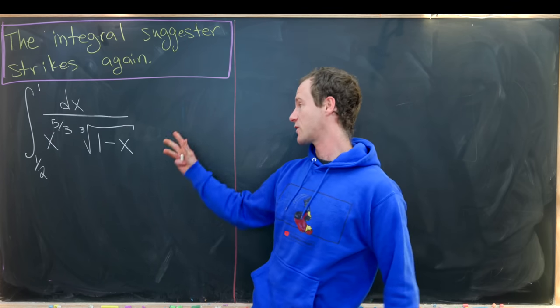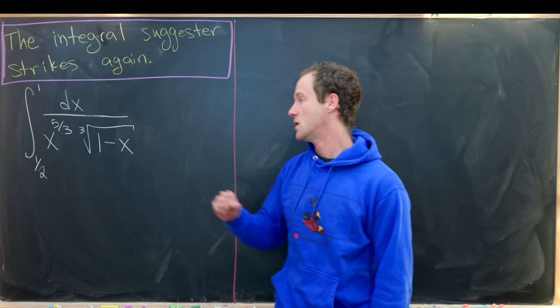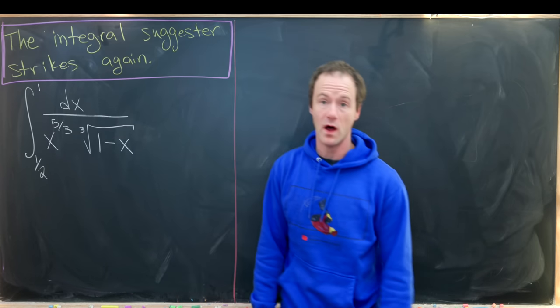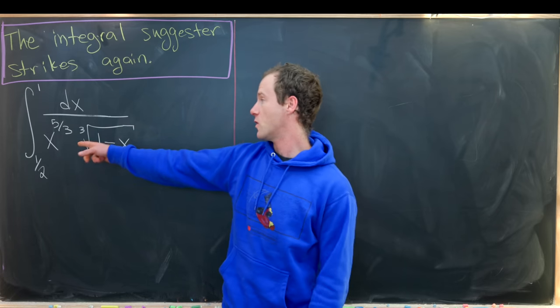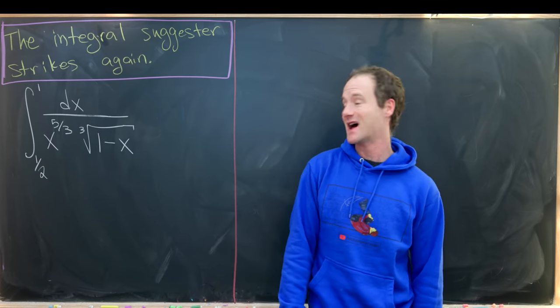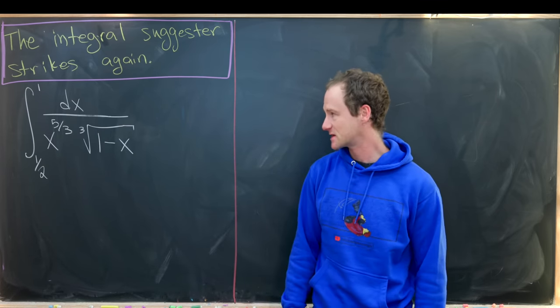So in this case we want to calculate the definite integral from 1 half to 1 of the function 1 over x to the 5 thirds times the cube root of 1 minus x.